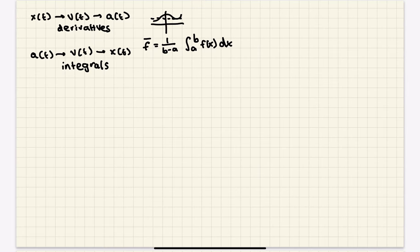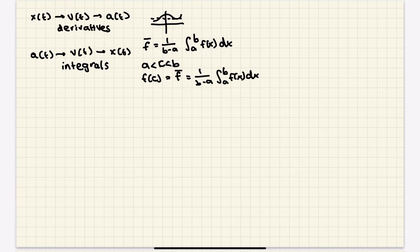This should ring a bell — the mean value theorem. That was the mean value theorem for derivatives, where we talked about the tangent line and secant line over an interval. We also have a mean value theorem for integrals. It says that if f(x) is integrable on the closed interval [a, b], then there is a value c between a and b such that f(c) equals the average value: 1 over (b minus a) times the integral from a to b of f(x) dx. There has to be at least one value of c such that the average value of the function equals the value of the function itself.